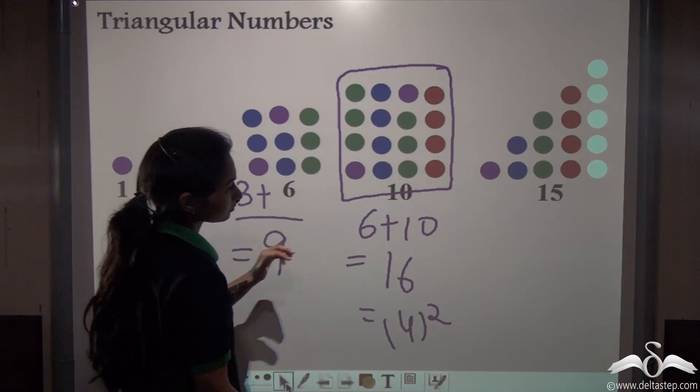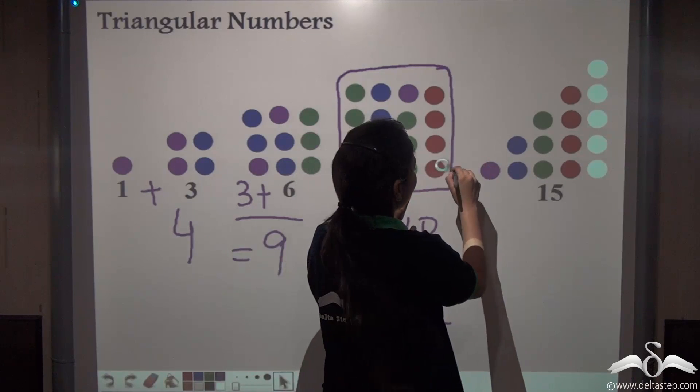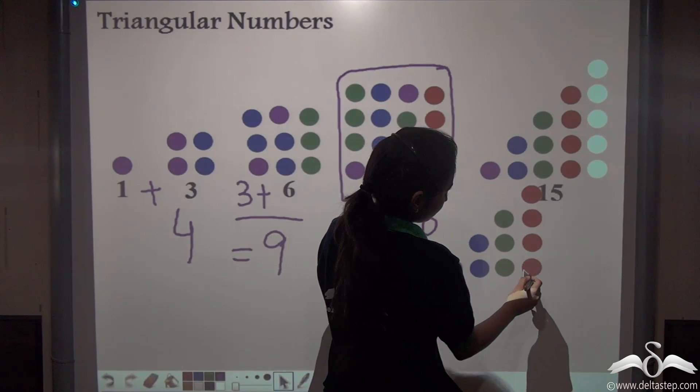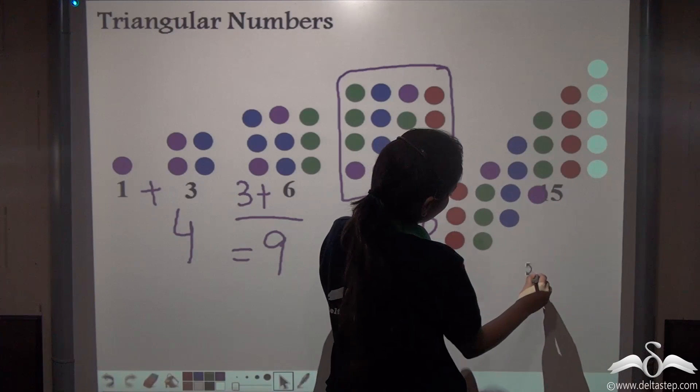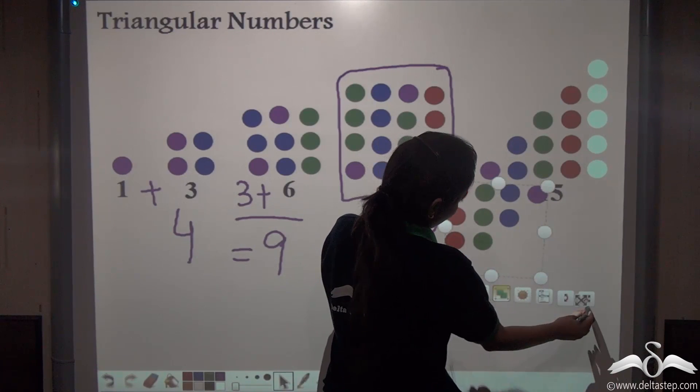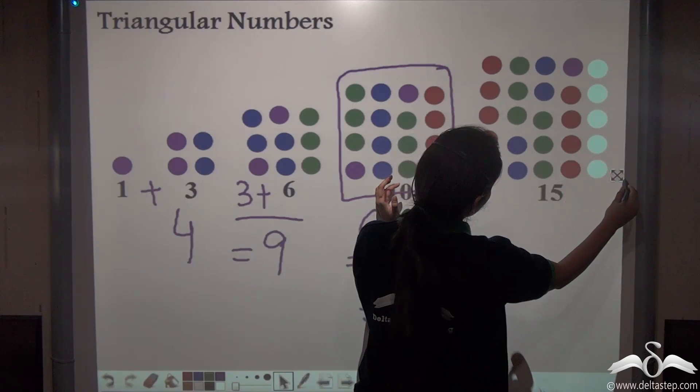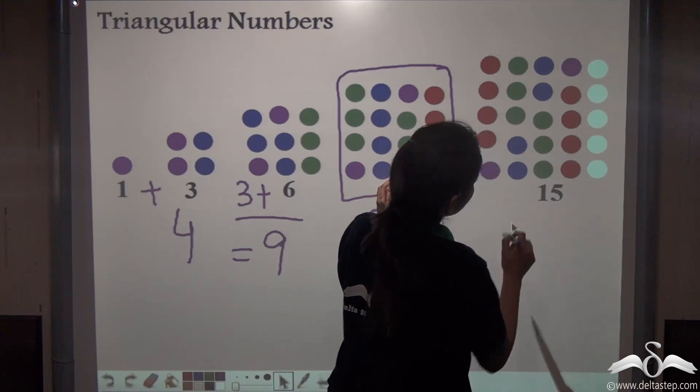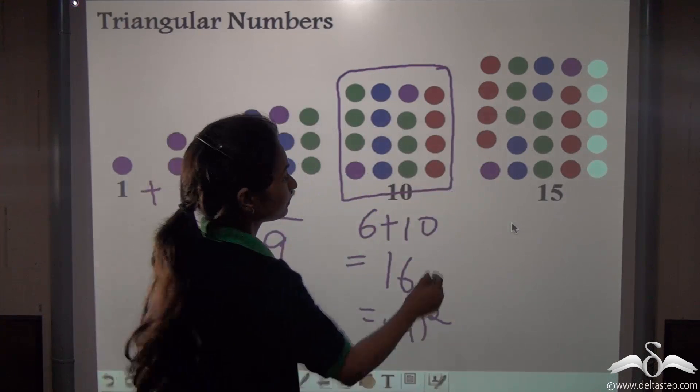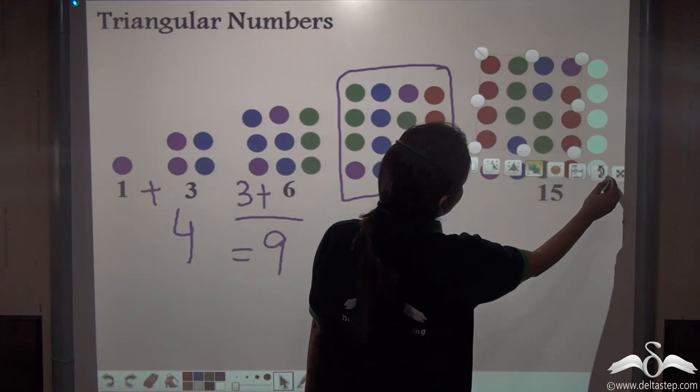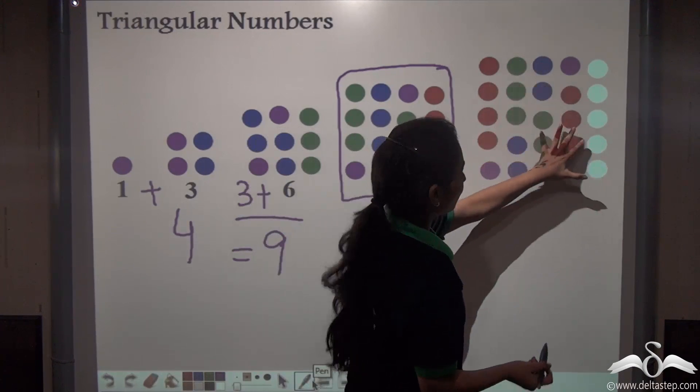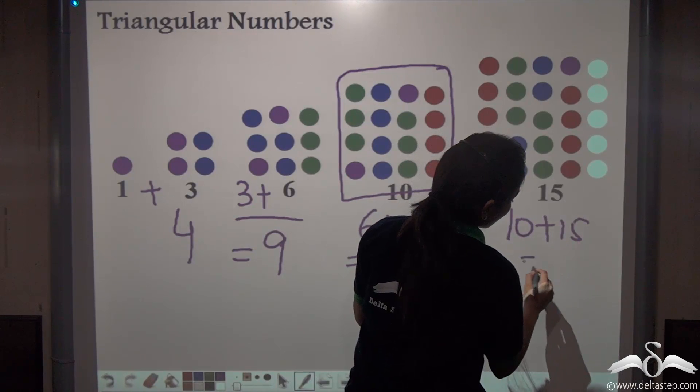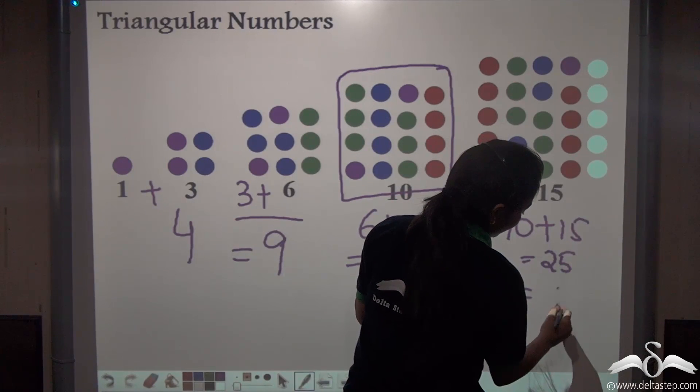Similarly, adding ten with fifteen. We are completing this square. See, it is a perfect square. So, adding ten with fifteen gives me twenty-five, which is a perfect square of five.